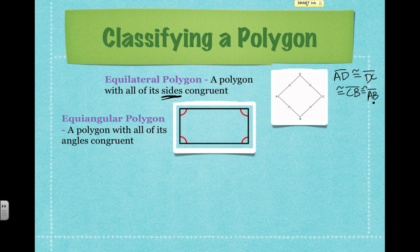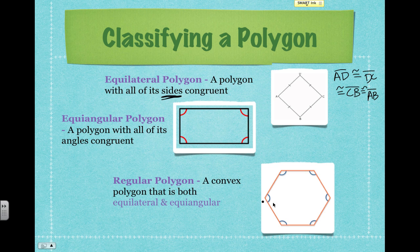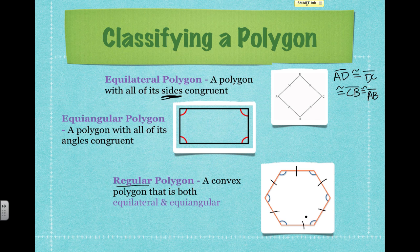A polygon is considered to be equiangular if all of the angles are congruent. Here we've got all four angles marked as being congruent, so because these four angles are all marked congruent, we know that it is equiangular. Lastly, if a polygon is convex and it's both equilateral and equiangular, then it's considered to be a regular polygon. This is a six-sided figure, so this is a hexagon — a regular hexagon. All six sides are congruent to each other, and all six interior angles are congruent to each other.